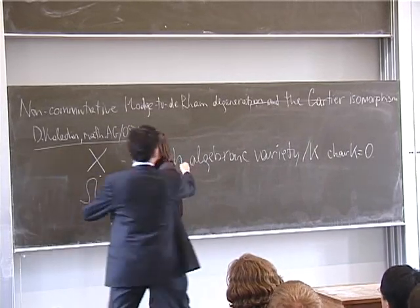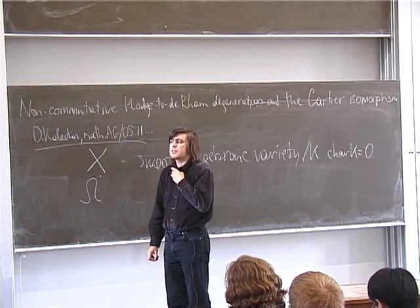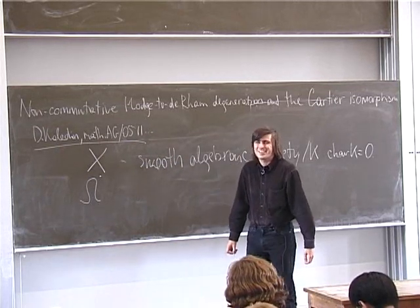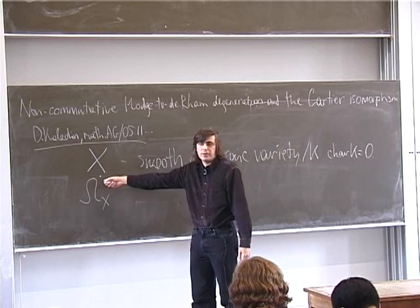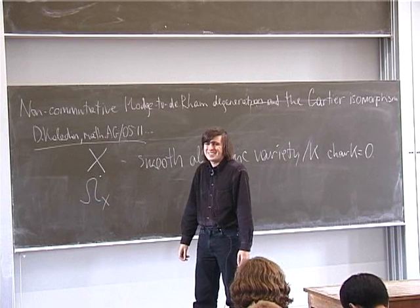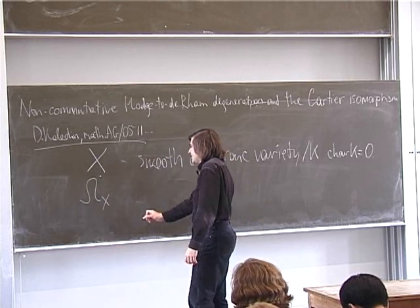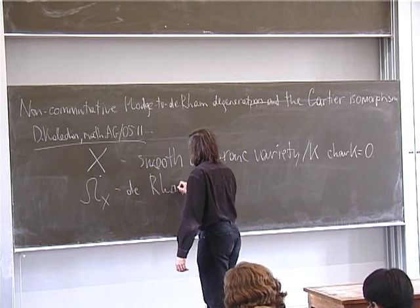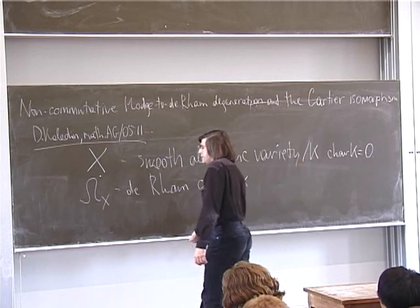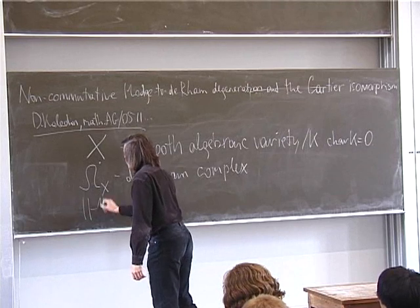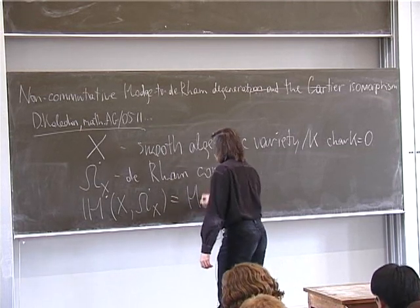So we have the de Rham complex on X. This is a thing which is defined in a purely algebraic way. We can consider the hypercohomology groups of X with coefficients in this de Rham complex, and these are known as the de Rham cohomology groups of X.